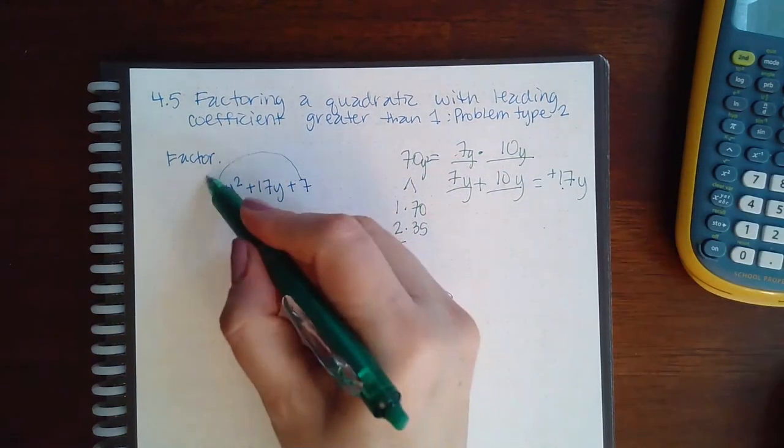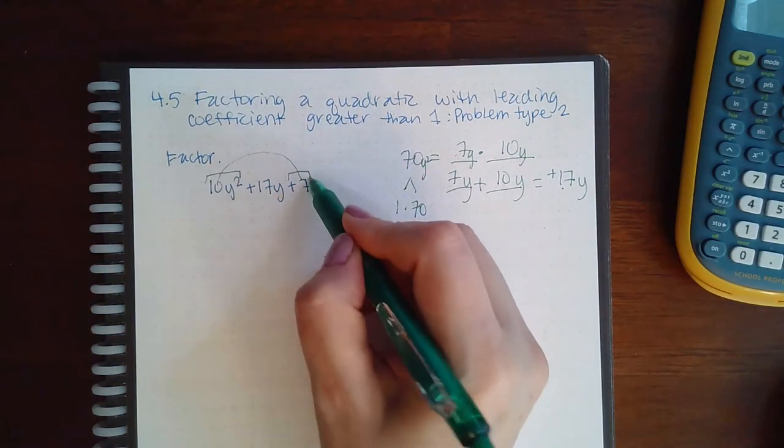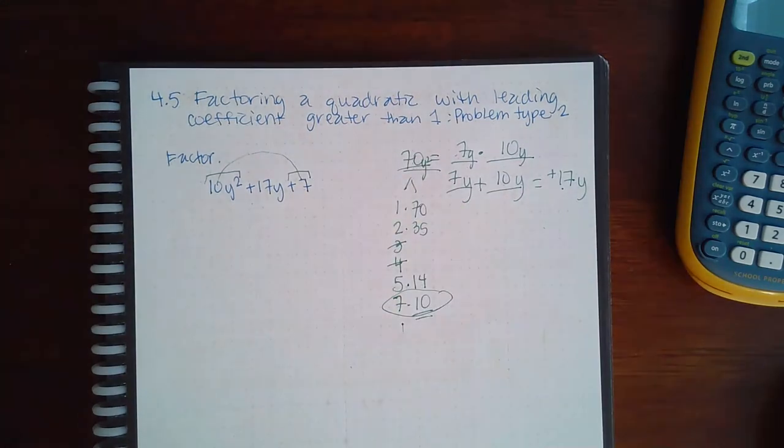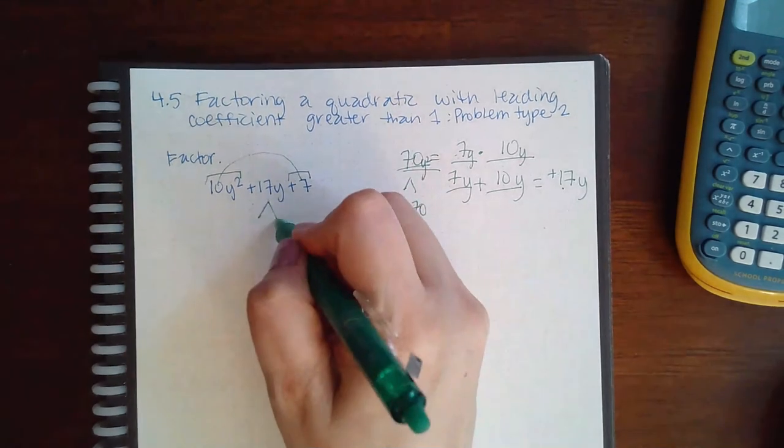Well if I take 10y squared times a positive 7, I do get 70y squared. So if you want to use the variables in there, you could. It's just not necessary because all we're doing is playing with numbers to try to figure out what those numbers are that multiply to give you 70 but add to give you 17. The only reason that you would throw in the variables is so that when you split the 17, you remember that they have to have y's on them.